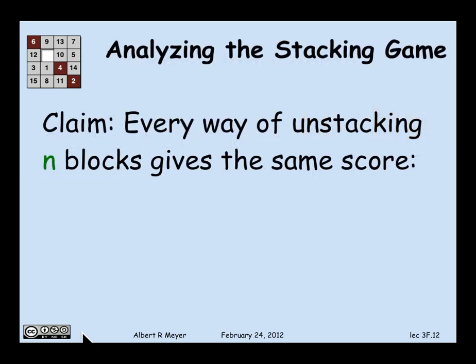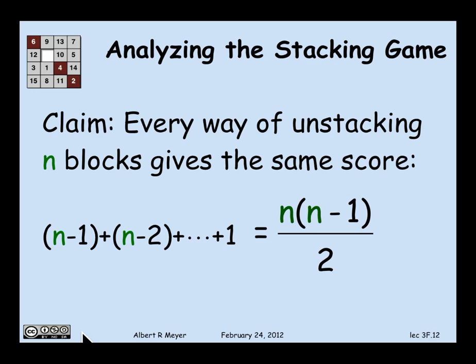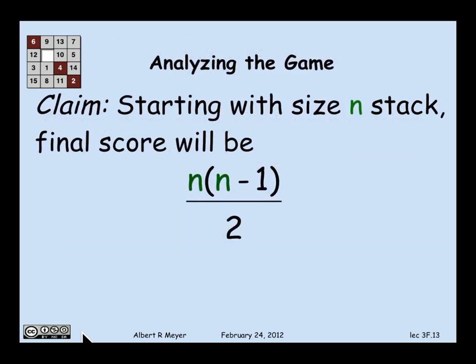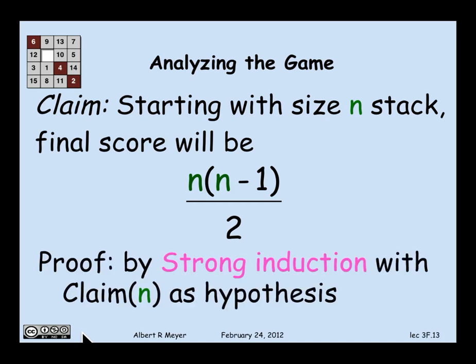Every way of unstacking n blocks gives the same score. Well, what score? Well, we know that the score for the simple strategy of taking one block off at a time is this sum from 1 to n-1. And that has a nice formula, n(n-1)/2. So we can formulate our claim that no matter how you play the unstacking game with a stack of size n, your final score will be n(n-1)/2. And we're going to prove this by strong induction with this statement called claim(n) is going to be the induction hypothesis. That's what we're trying to prove.